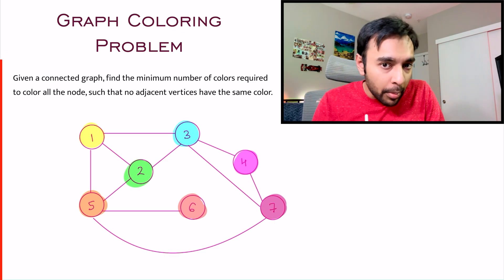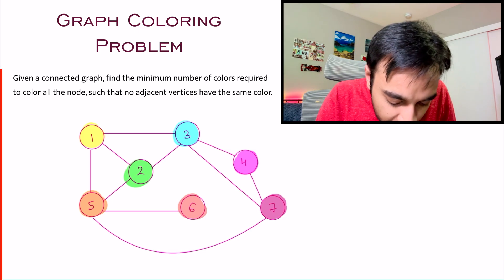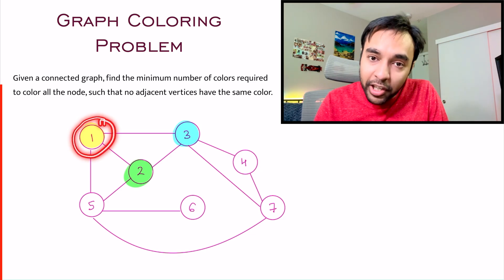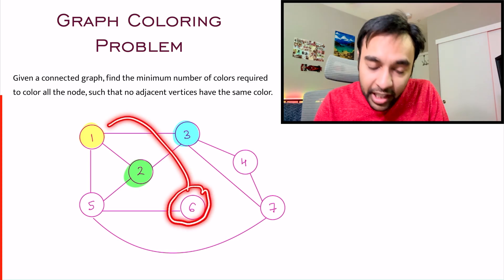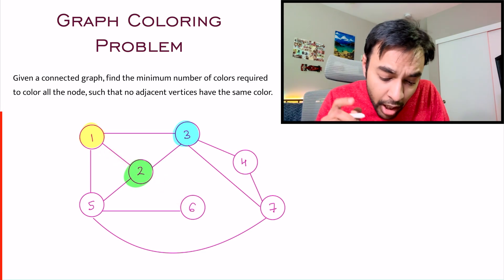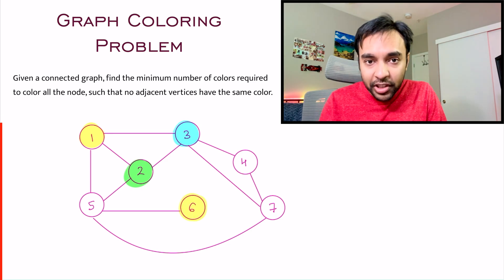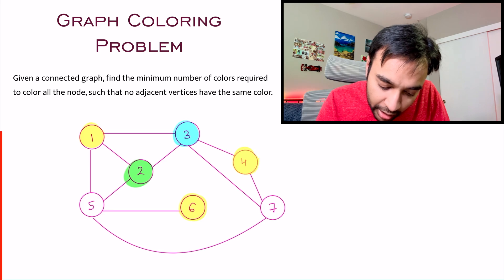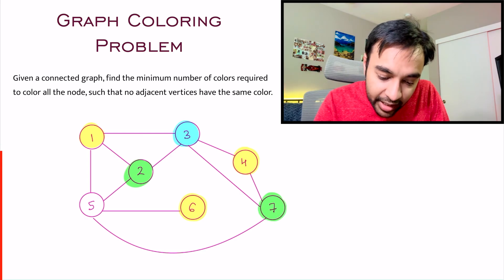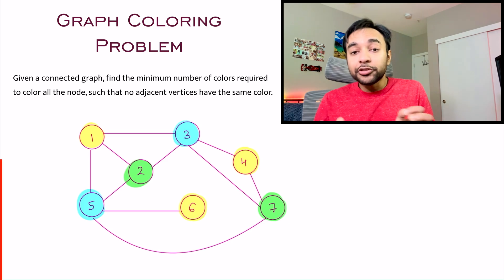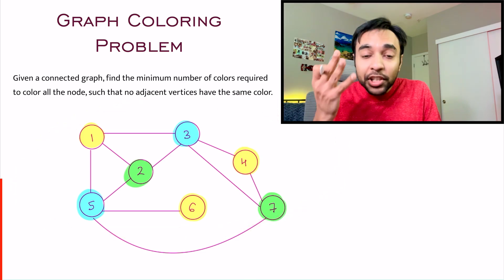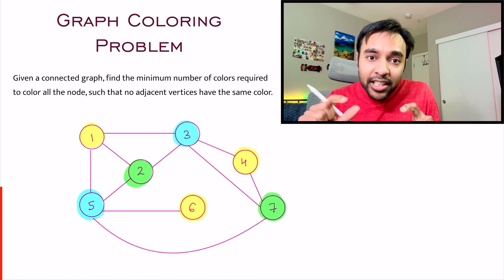You have to find out the minimum number of colors. Going by a brute force method, what you can do is simply try to reduce some of these colors. Node 6 is not connected in any way to node number 1 — we are only talking about direct connections. So technically, you can color node 6 also with yellow, and similarly you can also color node 4 with yellow. You can color 7 with green and then color 5 with blue. Just with three colors, you were able to arrive at a solution.